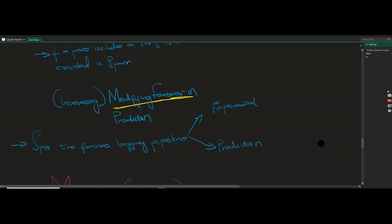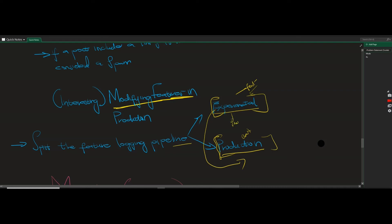An interesting part of the paper is how they handle modifying features in production. If you want to add a new feature, you can't just change it in production without breaking the model. So Facebook splits the feature logic pipeline into experimental and production. In the experimental pipeline, they can add and remove features freely, while the current model stays in production. Once rigorously tested offline, the experimental model replaces the production one.